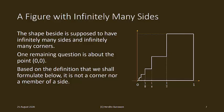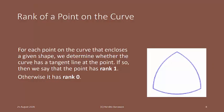For each point on the curve that encloses a given shape, we determine whether the curve has a tangent line at the point. If so, then we say that the point has rank 1. Otherwise, it has rank 0.